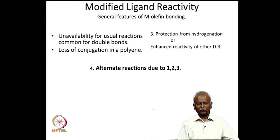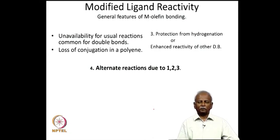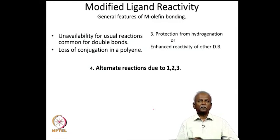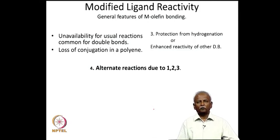The modified ligand reactivity we have seen is a result of the general features of metal-olefin bonding. We can also have additional reactions independent of the two factors just considered — for example, protection of the double bond from usual reactions because it is masked by the metal, and the loss of conjugation with a polyene. We will see a few examples where these two aspects are probed.